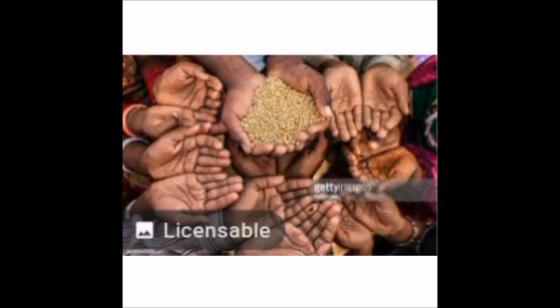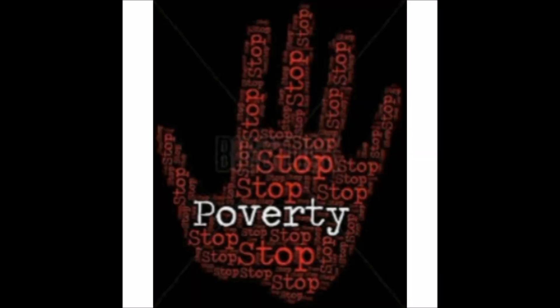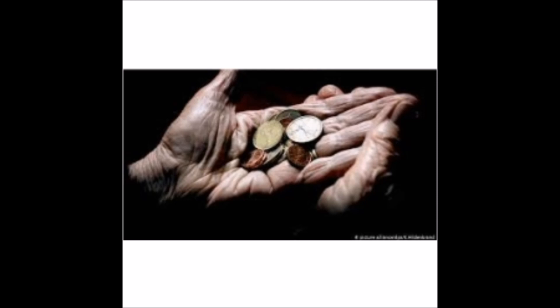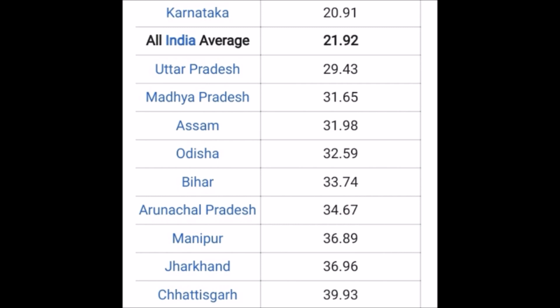Poverty is about not having enough money to meet basic needs including food, clothing, and shelter. However, poverty is much more than just not having enough money. The World Bank describes poverty as hunger. Poverty is most often a situation people want to escape. States with the highest percentage of people below the poverty line include: Karnataka 20.97%, Uttar Pradesh 29.43%, Madhya Pradesh 31.65%, Odisha 32.59%, Bihar 33.74%, Arunachal Pradesh 34.67%, Manipur 36.89%, Jharkhand 36.96%, and Chhattisgarh 39.93%.